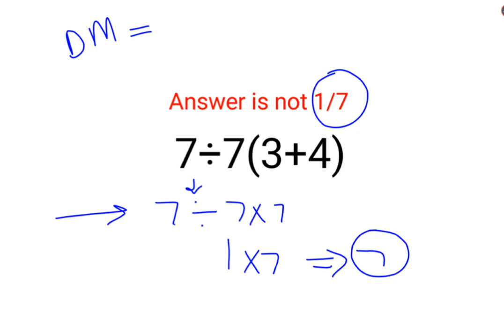See, when will the answer be 1/7? The answer will be 1/7 if this was also in a bracket. But since your actual question had just one bracket, the answer is just 7.